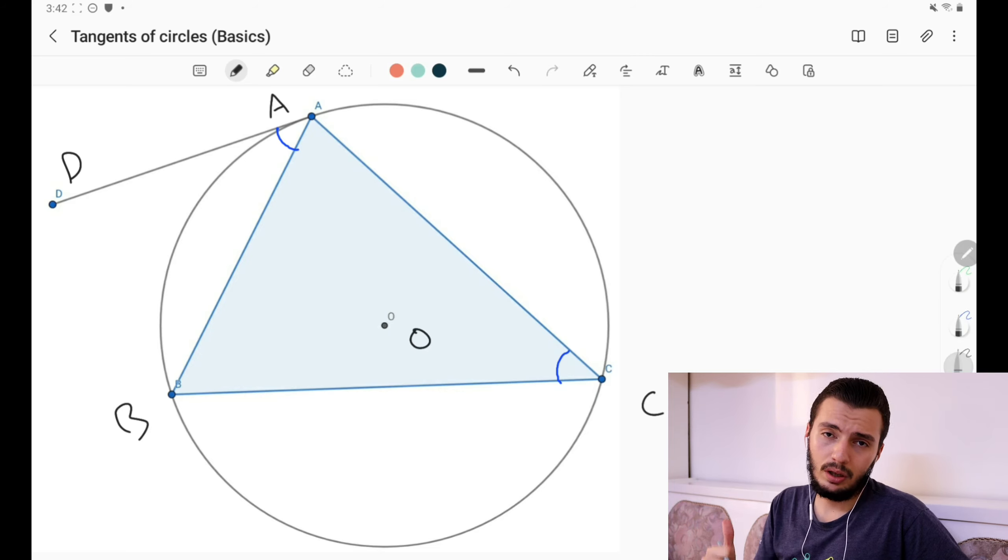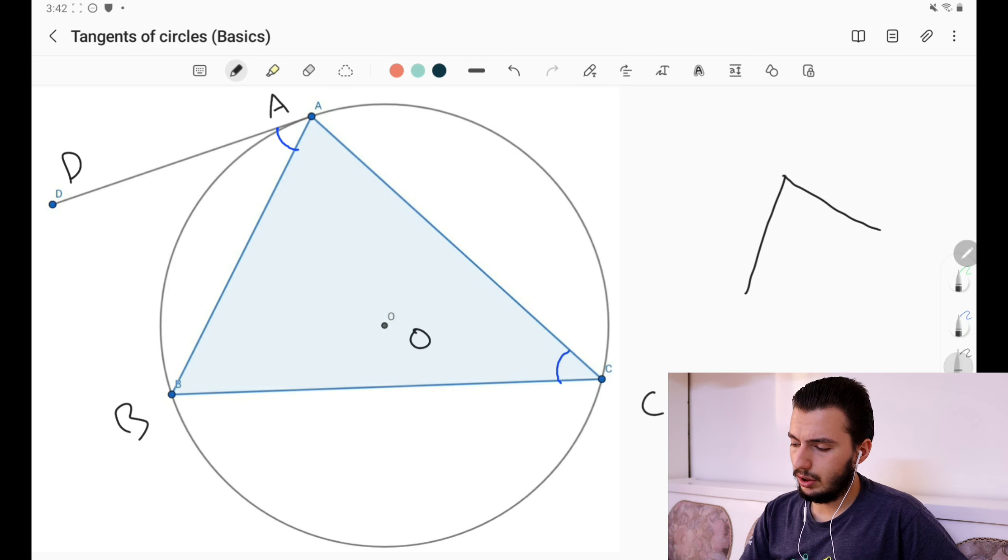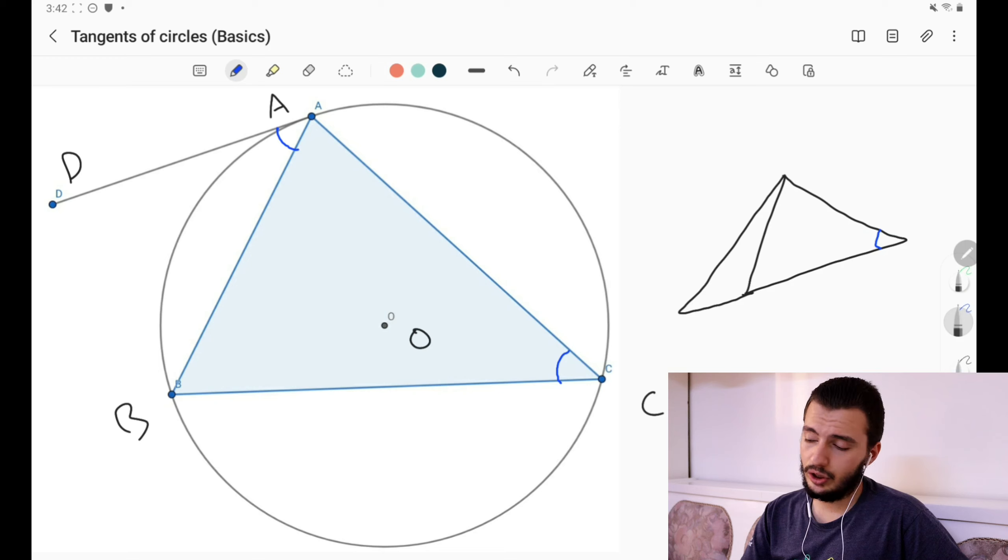So this is property number one. Whenever you have something like this, sometimes you might have a question with such a shape, which is very common. Somehow you do angle chasing or maybe it's given in the problem statement, and you get that this is equal to this. So you should immediately think about tangents here by just thinking about this circle. We draw the circle, then this is just a tangent line. So always keep that in mind. This is very useful and effective.